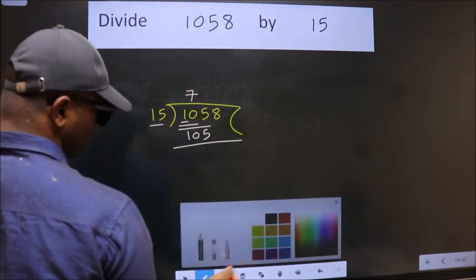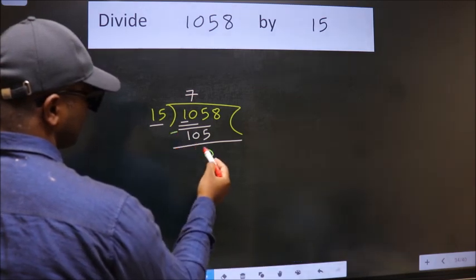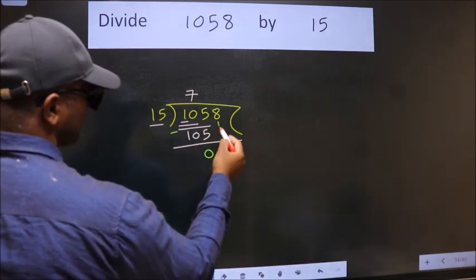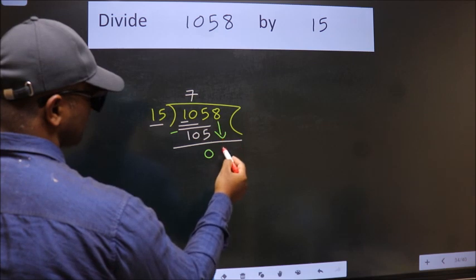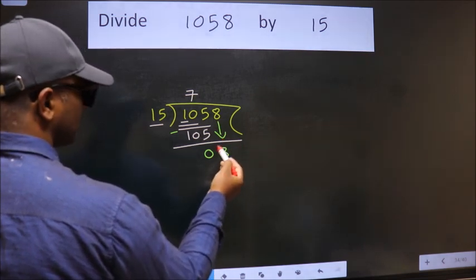Now we should subtract. We get 0. After this, bring down the beside number. So, 8 down. After this step, the mistake happens and the mistake is this.